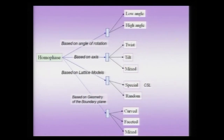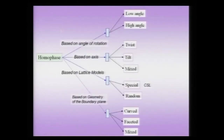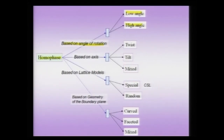The alternate way of characterizing homophase boundaries — which we shall contrast with heterophase boundaries — involves looking at them from different perspectives. We can look at a homophase boundary based on the angle of rotation, in which case you can have a low angle or a high angle homophase boundary. A homophase boundary based on the kind of axis we are talking about can be a twist boundary, a tilt boundary, or a mixed kind of boundary. The mixed boundary will have both twist and tilt components.